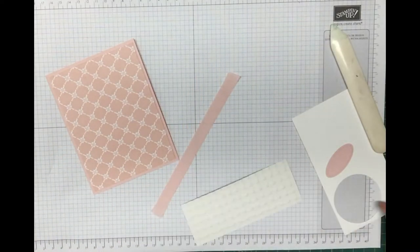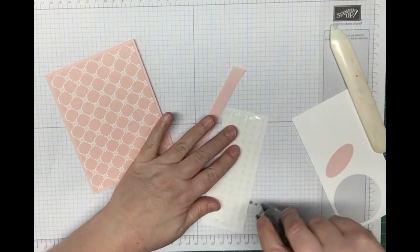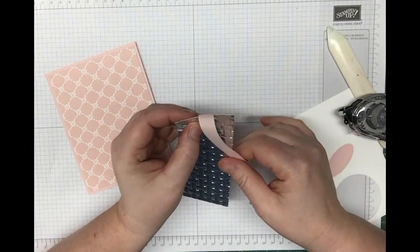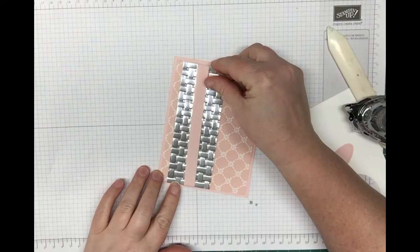What I like to do is take some adhesive, or you can take a piece of tape, find your middle, and then fold it to the front. Then we're just going to layer this right on the front of the card.